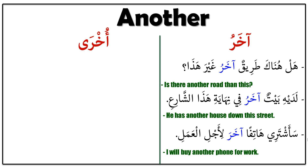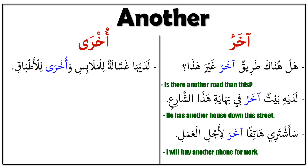Now let's look at 'ukhra'. The first sentence is: 'Ladeyha ghassalatun lil-malabisi wa ukhra lil-atbak.' It means 'She has a washing machine for clothes and another one for dishes.' 'Ghassala' means washing machine — 'lil-malabis' for clothes, 'wa ukhra' and another — another washing machine for dishes. We use 'ukhra' here because 'ghassala' is feminine.